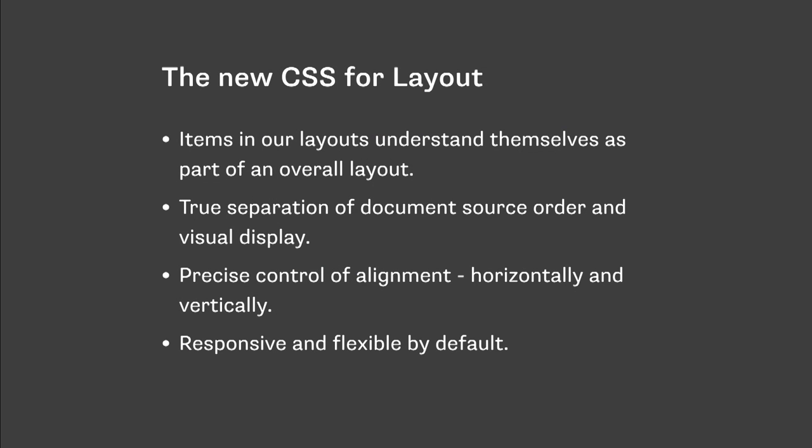I'm going to have a look at some examples of how they might work together and why we might use one or the other — all of the code is online so you can have a look at that later. The modules that make up this new system for layout share some common features. They properly separate the display from the source. They give us true alignment control for the first time, allowing us to center things both horizontally and vertically really easily. They're also responsive by default. They remove the need to calculate widths for columns. And really importantly, they give elements relationship in terms of the layout — so one thing knows about something else that's in the layout.